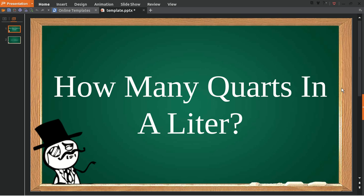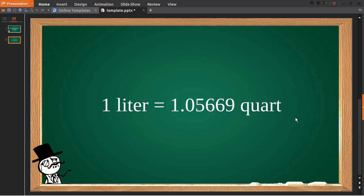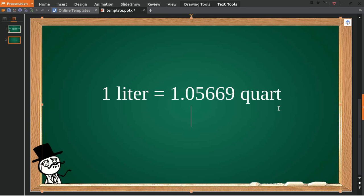Hello, what's going on everyone. In today's video we are going to answer this question about how many quarts in a liter. Well, this is the answer of the question: 1 liter is equal to 1.05669 quart.